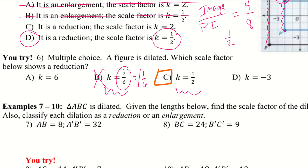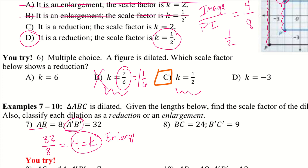Let's take a look at examples 7 and 8. Triangle ABC is dilated; given the lengths below, find the scale factor and classify each dilation. For example 7: A'B' is the image, so I do 32 divided by 8, which gives 4. K equals 4, which is greater than 1, so it's an enlargement. For example 8: B'C' is my image, so I do 9 divided by 24, which simplifies to 3 over 8. Since K is less than 1, we have a reduction.